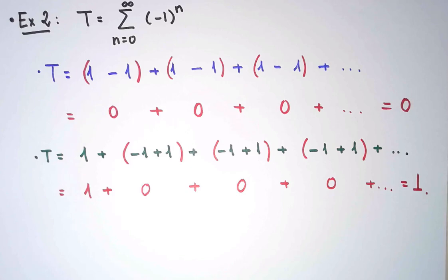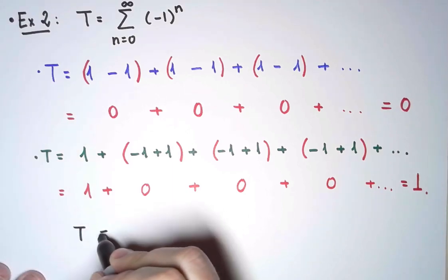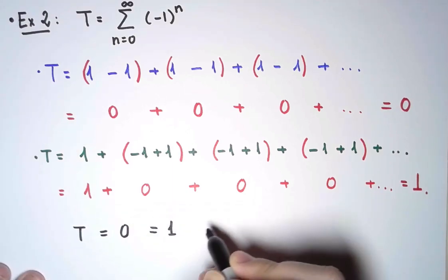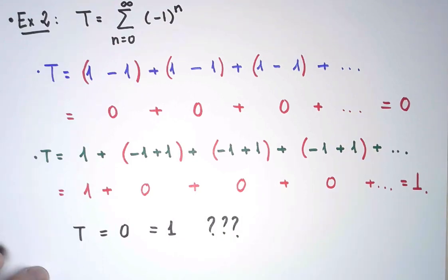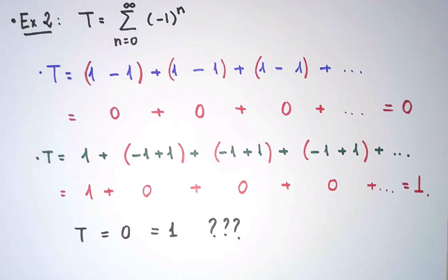So it appears that I have proven that this sum is equal to 0 on the one hand, and is also equal to 1, so 0 equals 1, that is obviously wrong. What I did here is not okay.